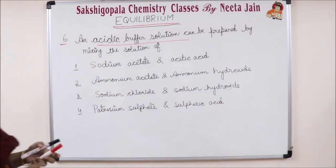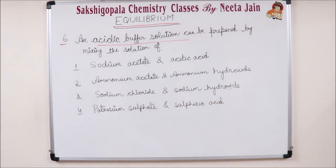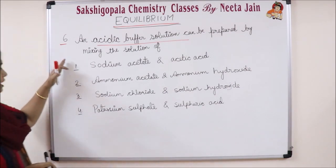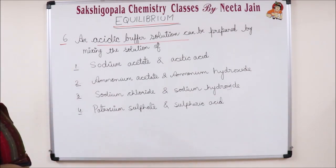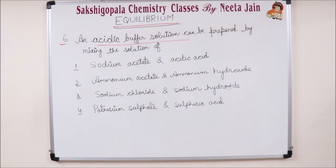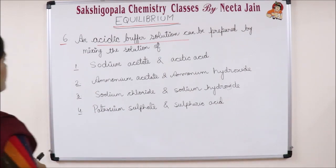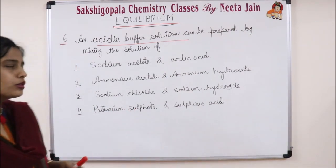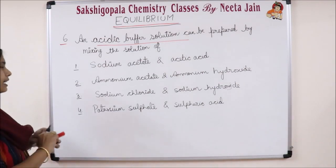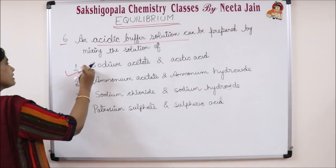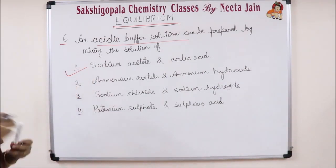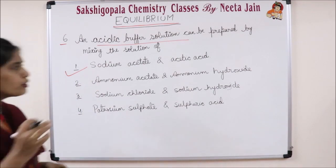Moving to question number 6: an acidic buffer solution can be prepared by mixing which solutions? There are four options. The correct answer is sodium acetate and acetic acid. The pH of this acidic buffer is around 4.75.